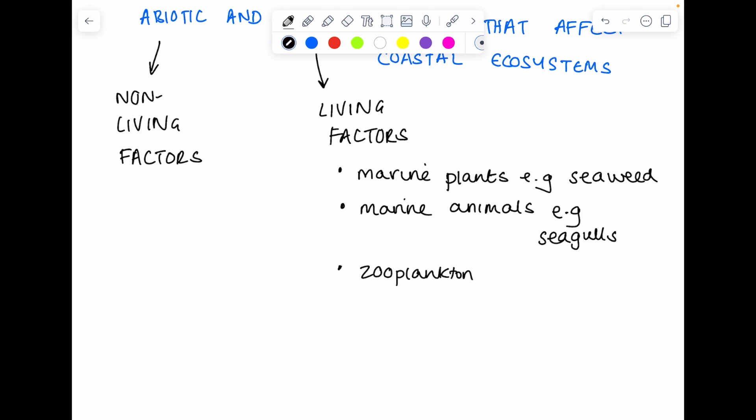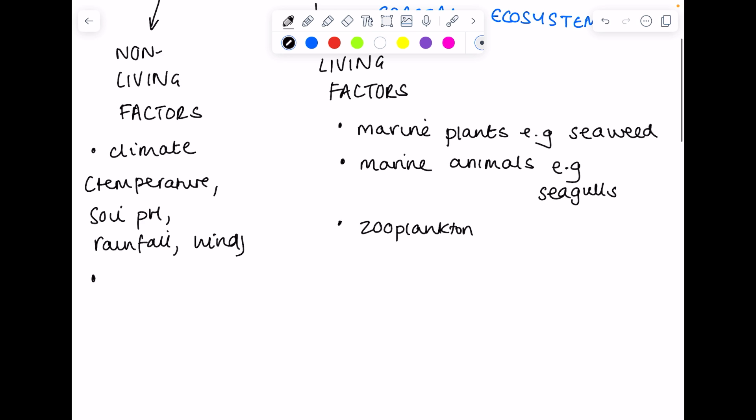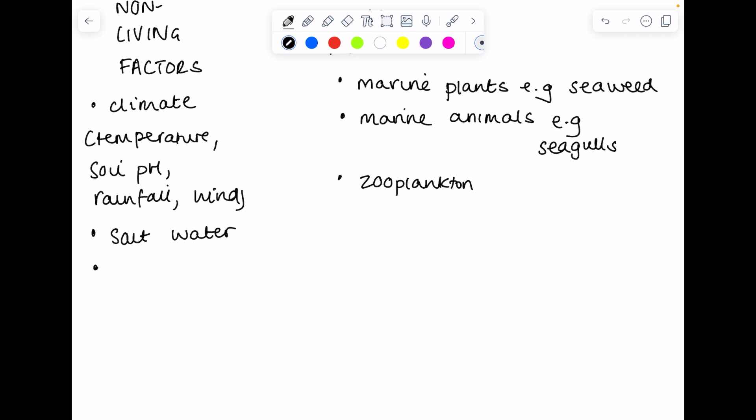Non-living factors include climate - and you can be really specific there - you can talk about temperature, soil pH, rainfall, wind levels. It could be salinity, so salt water, rock type, any minerals or nutrients present.